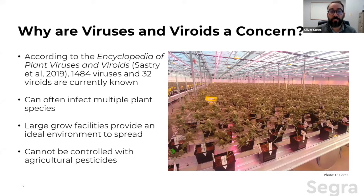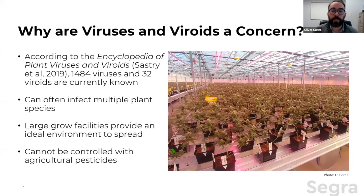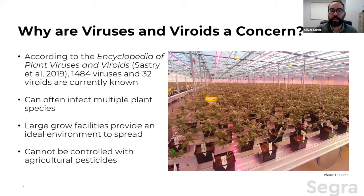Why are viruses and viroids a concern? According to the Encyclopedia of Plant Viruses and Viroids, there are over 1,500 currently known to infect plants — and this is probably a vast underestimation. Many of these can infect multiple plant species. When you're growing in large open facilities, many of which have been converted from growing other vegetables and fruits such as strawberries, peppers, and cucumbers, those prior crops could be harboring viruses that can easily jump to their new host, cannabis.